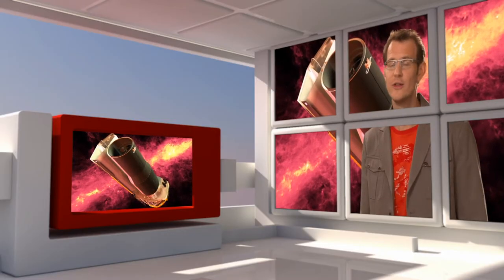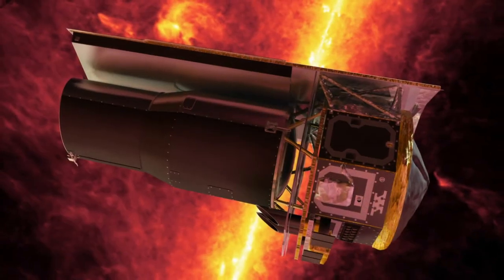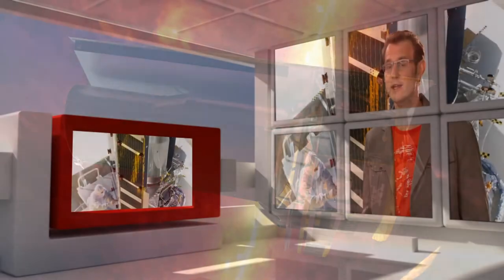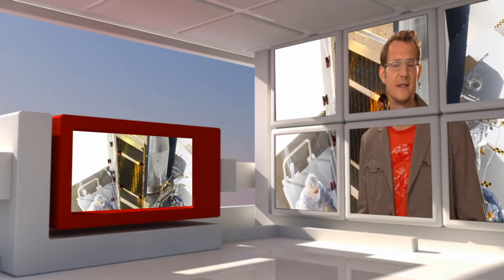Hubble is not the only telescope in space. This is NASA's Spitzer Space Telescope, launched in August 2003. In a way, it is Hubble's equivalent for the infrared. Spitzer has a mirror that is only 85 cm across.